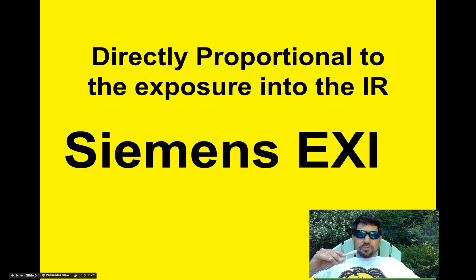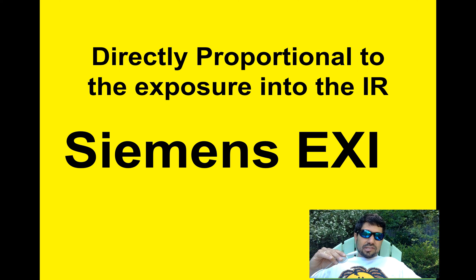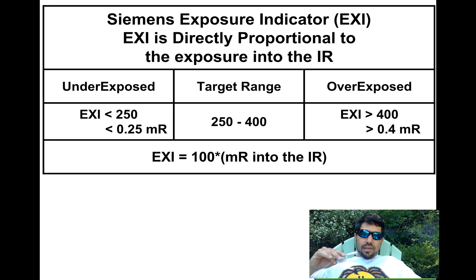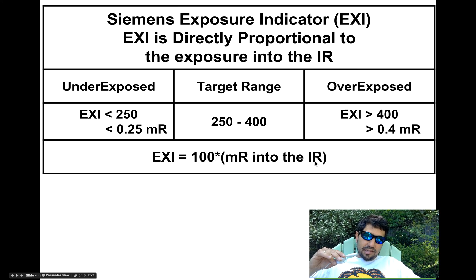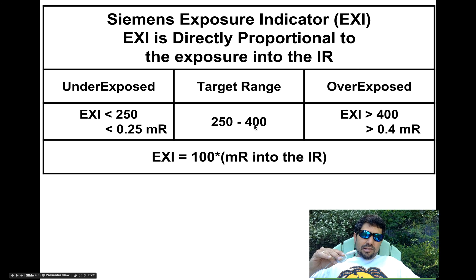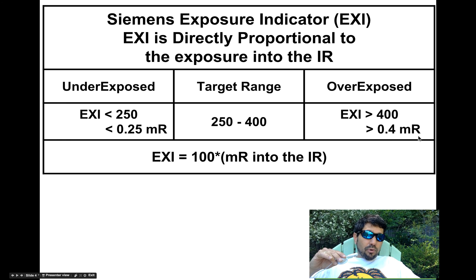Now we'll get into a specific vendor's indicator and you'll see how we can do math problems with them. The Siemens EXI number is directly proportional to the exposure that got into the IR. The math for it is they take 100 and multiply it by the MR that got into the IR. Ideally, the indicator reports back numbers between 250 and 400, meaning you're applying the appropriate exposure. Greater than 400 means you're applying more than 0.4 MR and you're overexposing your patient.